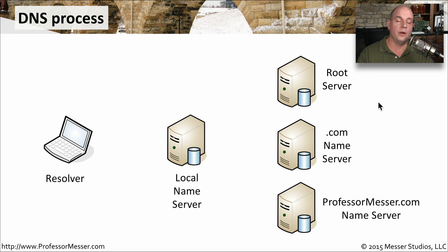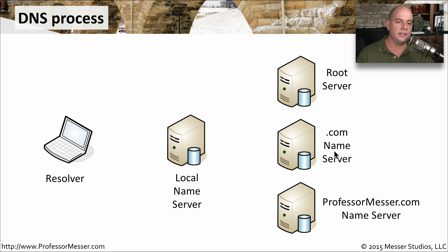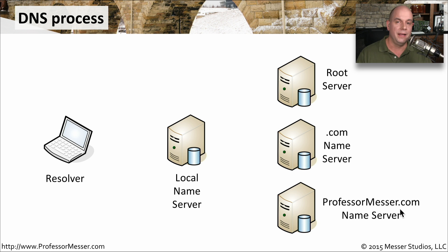In our example, we're going to look for the www.professormesser.com server. I need the IP address of that device so that I can access it. We will be talking to one of the 13 root servers that's on the internet. That will take us to the .com name server. There are also other name servers for .net and .org and all of those others. And I have a name server that handles all of my local IP addresses, so that ultimately we're going to talk to that server to find out what is the IP address of my web server.